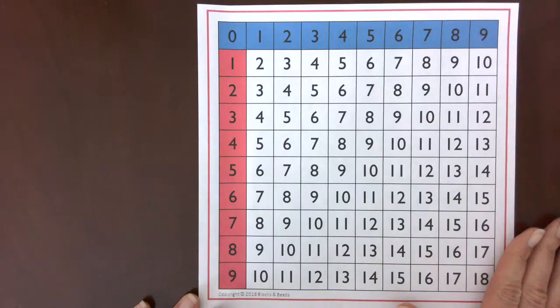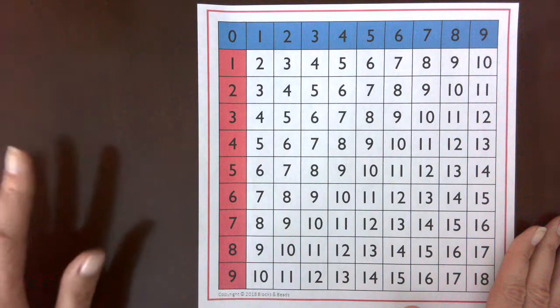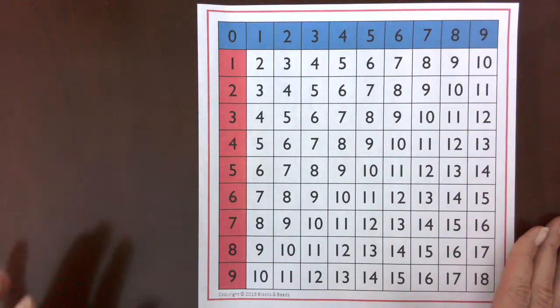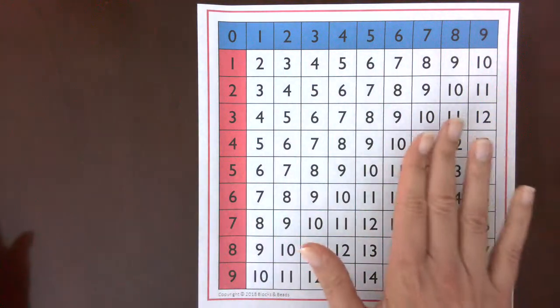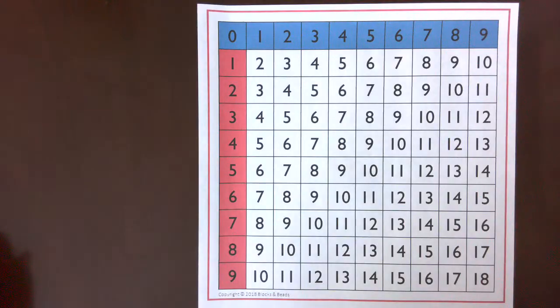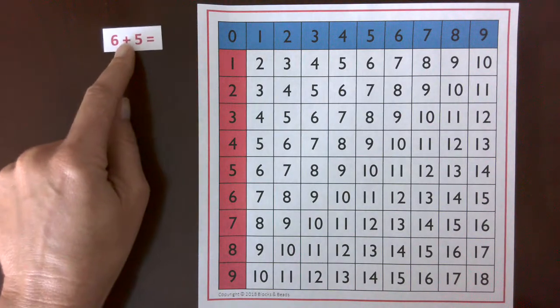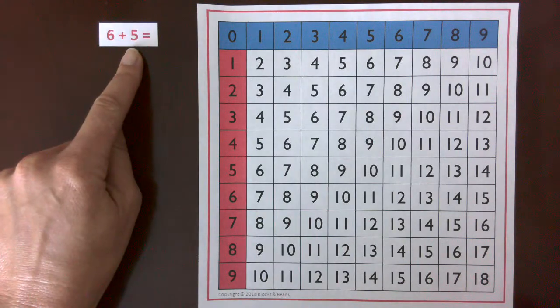Most people are familiar with a multiplication chart and how that works, but there are charts for addition, subtraction, multiplication, and division facts. This one works very similar to the multiplication chart. So let's start with an equation: we have six plus five.